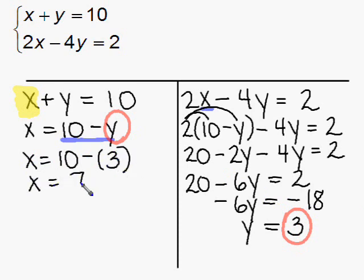We'll undo the multiply by negative 6 by dividing both sides by negative 6. That gives us that y is equal to 3.